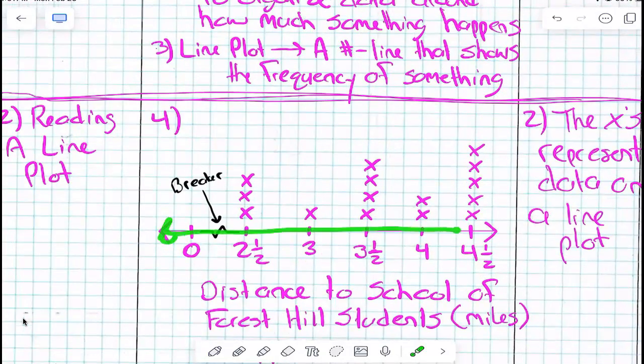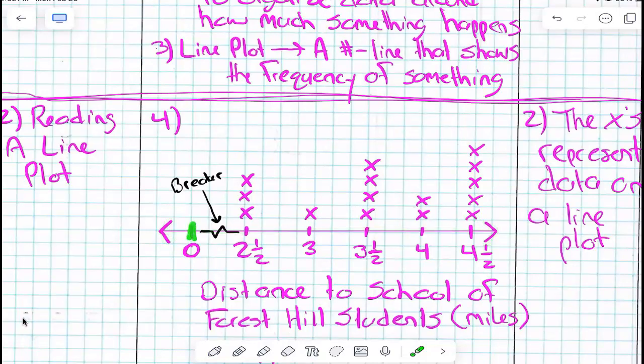What's this thing right here? Well, that's a number line, right? But a number line is part of a line plot. And we have these tick marks. The tick marks have numbers below them, don't they? What does this number represent? I know it represents three and a half, but what are we talking about? Three and a half of what?